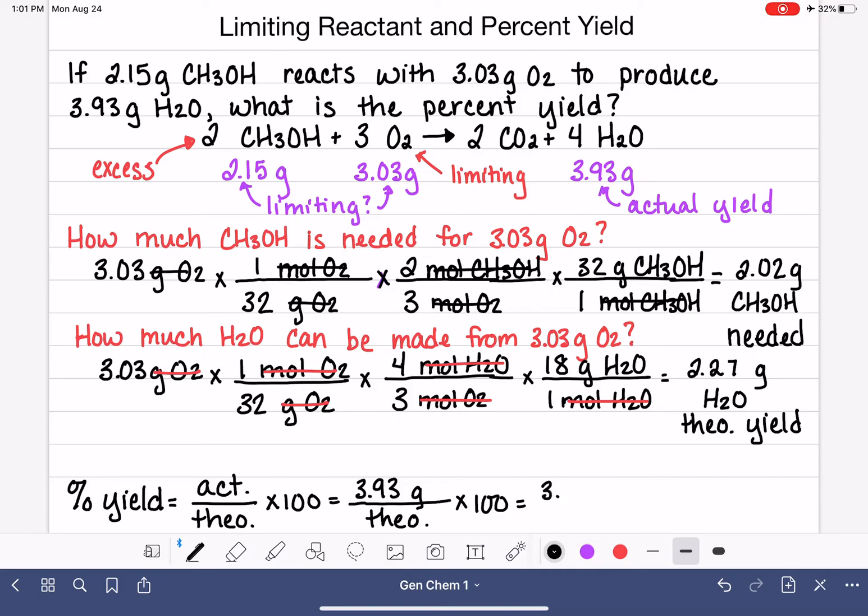So our actual yield, again, we're going to recopy that, 3.93 grams. Our theoretical yield, 2.27 grams, multiply by 100. And we'll go back to the calculator one more time.